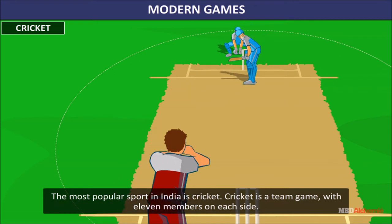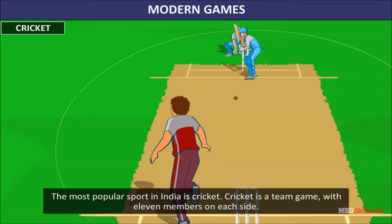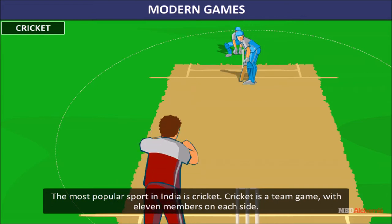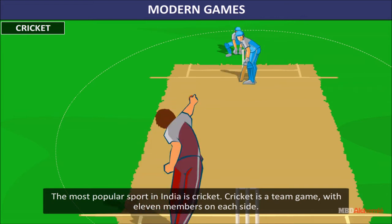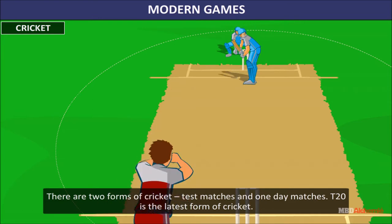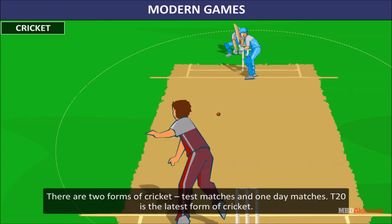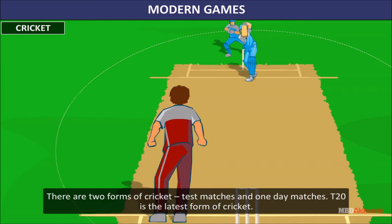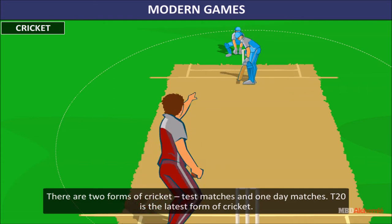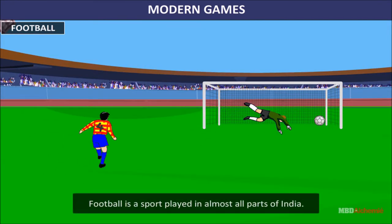Modern games. Cricket is the most popular sport in India. Cricket is a team game with 11 members on each side. There are two forms of cricket: Test matches and One Day matches. T20 is the latest form of cricket.